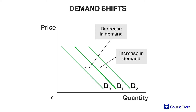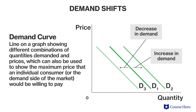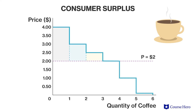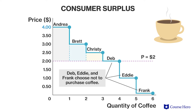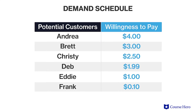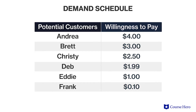The concept of maximum willingness to pay offers a different way to consider a demand curve — a line on a graph showing different combinations of quantity demanded and price — which can also be used to show the maximum price that an individual consumer or the demand side of the market would be willing to pay. For example, assume individual consumers are willing to pay different maximum amounts for their morning coffee, ranging from $0.10 on the low end to $4 on the high end. This can be represented on a demand schedule, which is a table showing the quantity demanded of a good at different price points, and can also be used to show the maximum price that a single consumer would be willing to pay. It's important to note that these basic calculations do not take into account every possible factor that could impact demand and the price that consumers would be willing to pay.